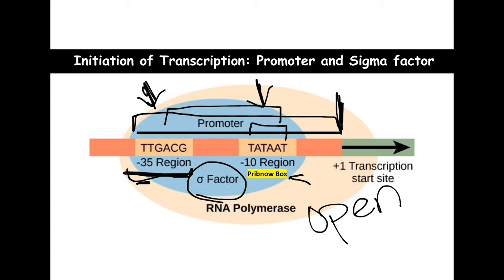This process occurs upstream to the transcriptional start site, on the DNA region, because the RNA polymerase is scanning the DNA looking for the recognition site at minus 35 and the Pribnow box to orient itself. This also enhances the transcriptional process — if there were a mutation in those areas, it would not be good. Sigma factor is so critical; if you do not have the sigma factor, you cannot have initiation of transcription. Once the open complex forms and the initiating complex is properly made, the sigma factor leaves and the RNA polymerase can proceed with the rest of transcription.